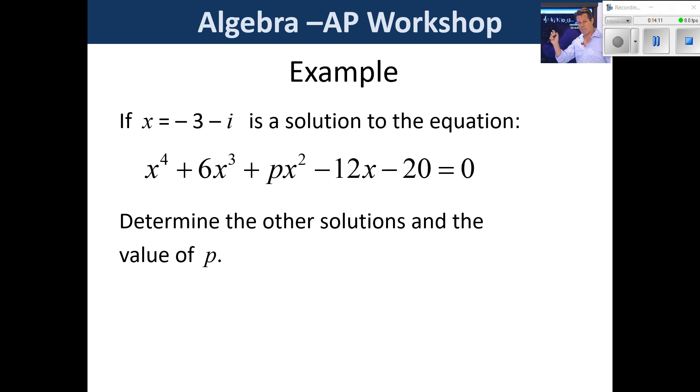So here's one such example. This is a perfectly typical exam question. If x is equal to negative 3 minus i and that's a solution to the equation, determine the other solutions. And then the value of p. If you're not watching this live, I'd suggest that you pause the video right now and then try this yourself and see how you go. So if this is a solution, there is always going to be a complex conjugate which is also a solution. So straight away, all of us should be saying negative 3 plus i is another solution.